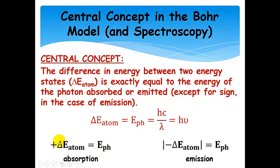For emission, we have to take the absolute value because the atom goes down in energy, so that's negative delta E atom. And so, we take the absolute value of that, and that is what is equal to the energy of the photon.